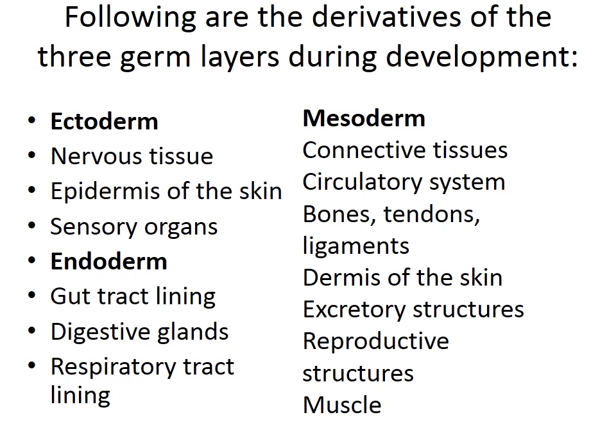The derivatives of the three germ layers are: ectoderm gives rise to nervous tissue, epidermis of the skin, and sensory organs; endoderm gives rise to the gut tract lining, digestive glands, and respiratory tract lining; mesoderm forms connective tissue, circulatory system, bones, tendons, ligaments, dermis of the skin, excretory structures, reproductive structures, and muscles.